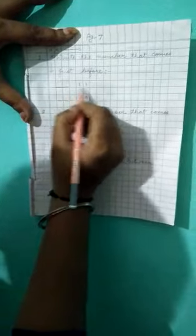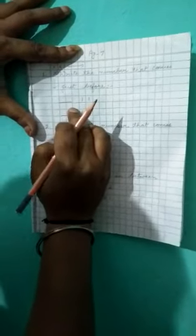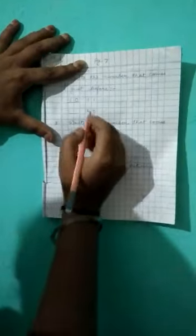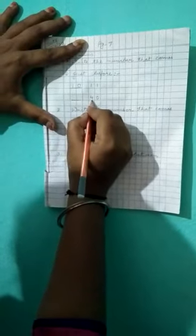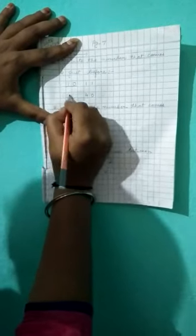Then start writing from the next line. Question number 1 is write the number that comes just before. So 11. But between the question and answer, one box gap you give. So what comes before 11? 10. Now here you see what comes before 40. Answer is 39.